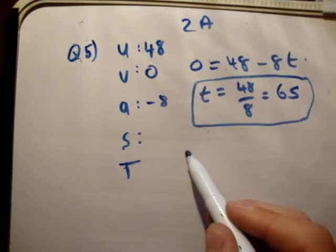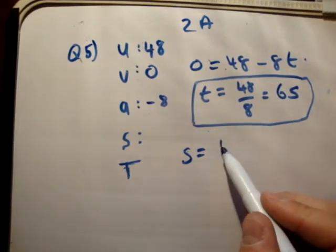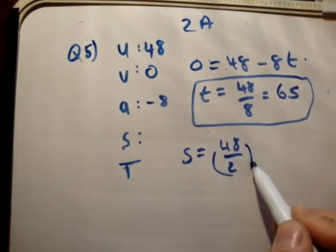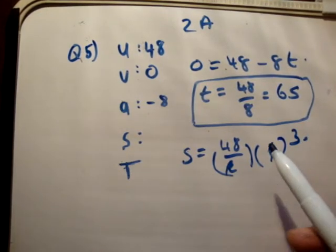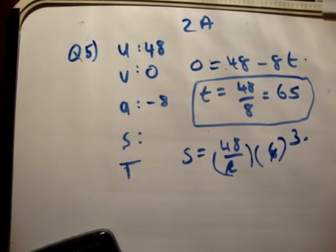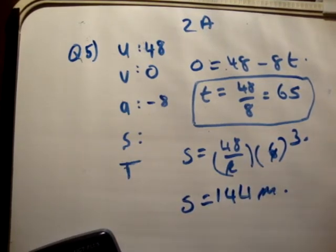To get the distance, we use S equals U plus V over 2 times T. You could use the other formula if you like, but this is the one I'll use. So 48 divided by 2 multiplied by 6 seconds. 3 times 48 gives me S equals 144 meters. Let's check that in the back of the book. 144 meters is correct.